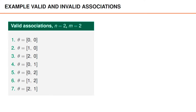Let's look at some examples of valid and invalid associations, again with two objects and two measurements. There are seven valid associations in this case. In the first, neither object is detected. In the second and third, the first object is detected and the second is misdetected. In the fourth and fifth, the first object is misdetected and the second is detected. In the sixth and seventh, both objects are associated to a detection. These seven valid associations are numbered 1 to 7, though the numbering does not carry specific meaning.